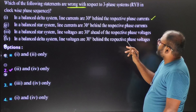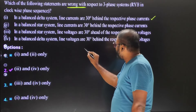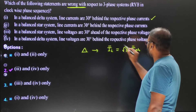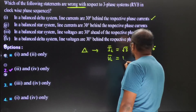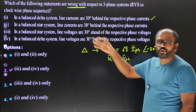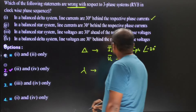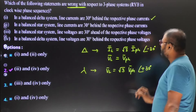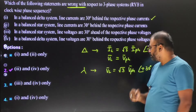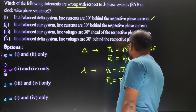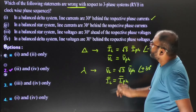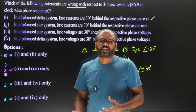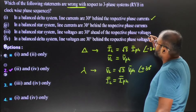For a delta connection, line current equals root three times phase current at an angle of minus thirty degrees, and line voltage equals phase voltage — that is basic. For a star connection, line voltage equals root three times phase voltage at an angle of plus thirty degrees, meaning line voltage leads phase voltage by thirty degrees. And line current equals phase current. Statement two says: in a balanced star system, line currents are thirty degrees behind the respective phase currents — but line current and phase current are the same in star, so this is a wrong statement.